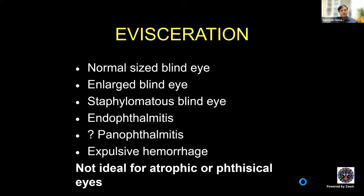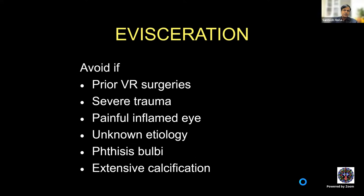Evisceration is not ideal for atrophic or phthisical eyes, mainly because the goal of placing an optimally sized implant and replacing volume is not adequately met in these eyes unless you do relaxing incisions or place the implant retrosclerally. In phthisical eyes, you will not be convinced about complete removal of uvea, as there may be uveal remnants due to degeneration and adhesions within these eyes.